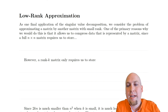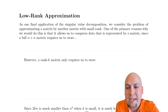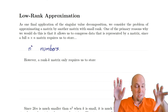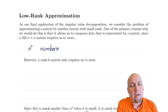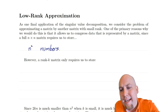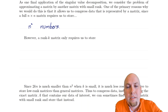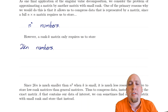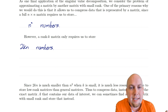So here's the setup. If you want to store just a general full n by n matrix, you're going to have to store n squared numbers — there are n squared numbers in that matrix. Instead, if your matrix happened to have low rank, in particular if it has just rank K, then you could store that matrix via just two times K times n numbers.